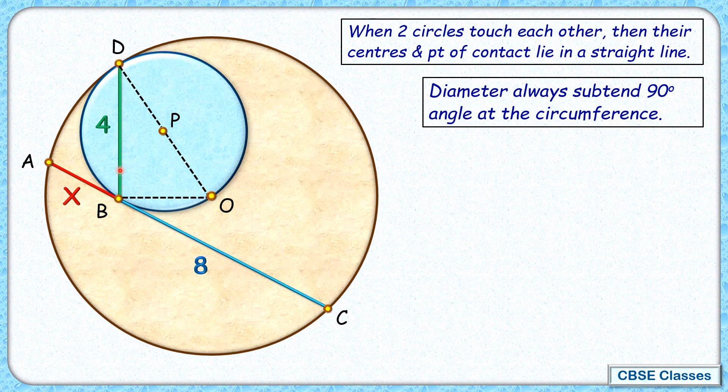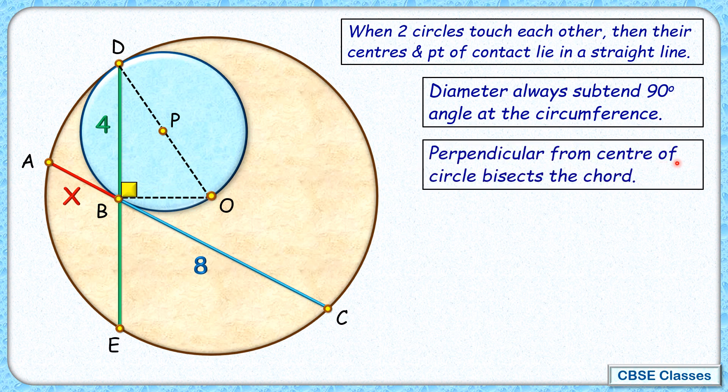So this angle here is 90 degrees. Now let's extend DB here to meet the circle at point E. Now we know again by theorem that if we draw a perpendicular from center of circle, then it bisects the chord. So this brown circle, from its center point O, we have drawn a perpendicular OB, so this OB by theorem will bisect the chord DE. So these two lengths will be equal, or BE length will be nothing but 4 centimeters.